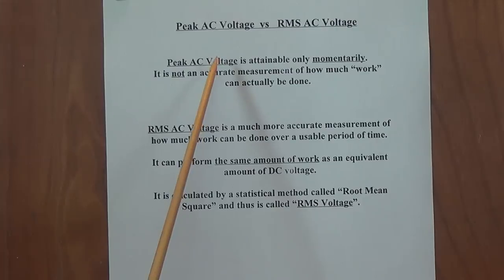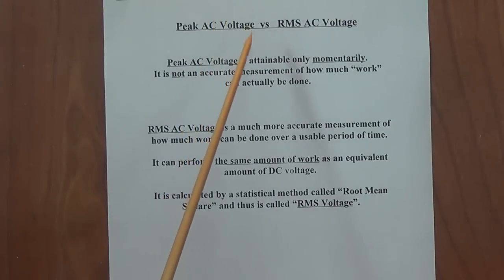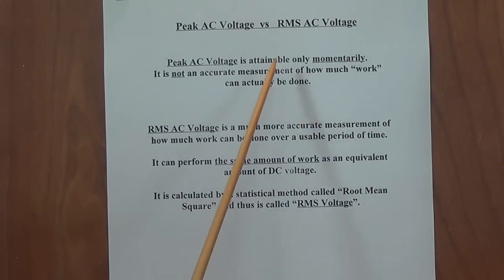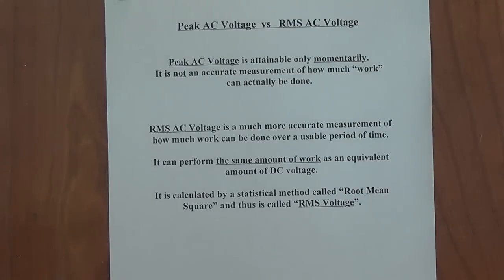The peak AC voltage, which was the 169.7 volts positive and negative that comes from the wall socket, is attainable only momentarily. It's not an accurate measurement of how much work can actually be done. Now, I'm going to use one of my goofy analogies here. Say I work on a farm and I need to hire people to load hay bales into a truck. What would be the best question to ask them? What is the absolute heaviest weight that you can lift one time a day into a truck? Or what is the heaviest weight that you can lift all day and load into a truck? Wouldn't it make more sense to get the all day figure so that you know what kind of work this person can do for you?